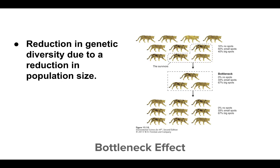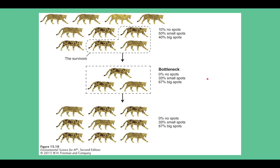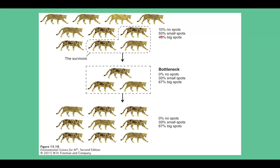Then we have the bottleneck effect — reduced population numbers means reduced genetic variation. Looking at cheetahs, if a population experiences a drastic decrease in size, it goes through a bottleneck. Some genotypes are lost and the genetic composition of the survivors will differ from the original group. We can see there were some cheetahs with no spots, large spots, and small spots. But because of that bottleneck, now there are no cheetahs with absolutely no spots and a majority have big spots — whereas originally the small spots were the most numerous.